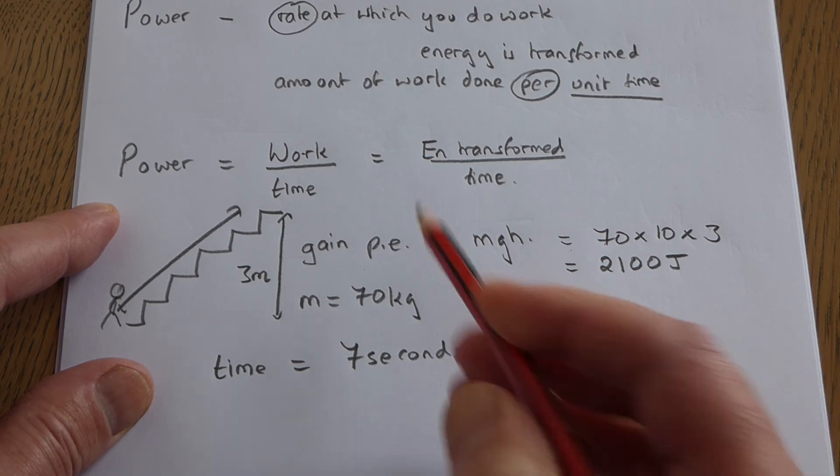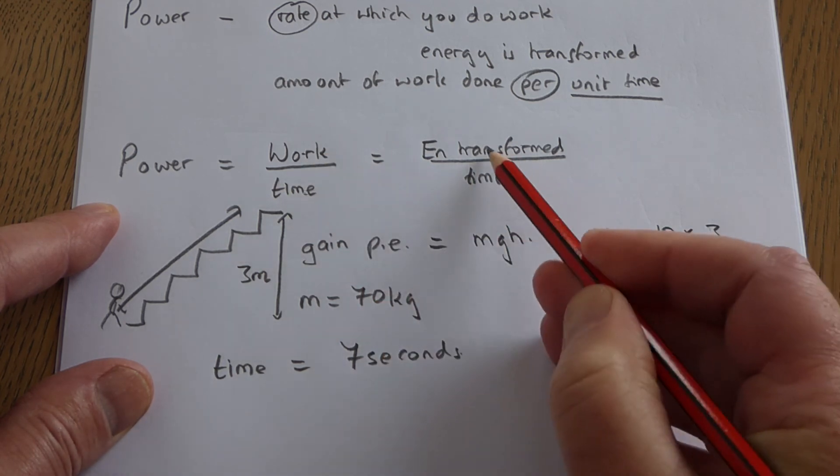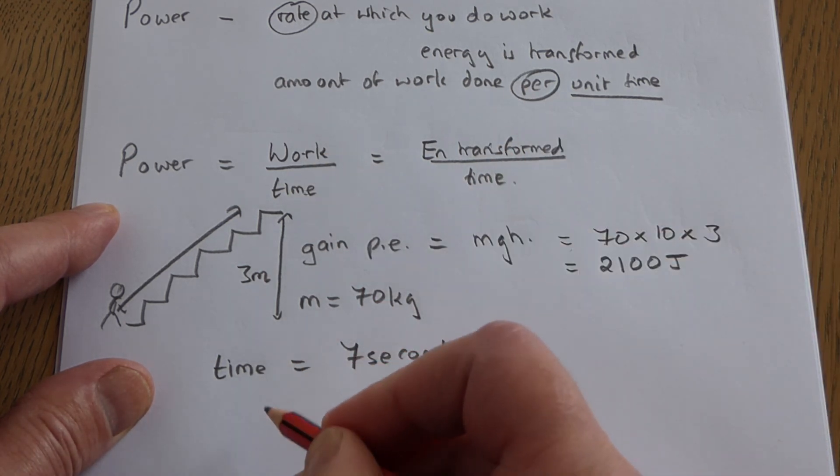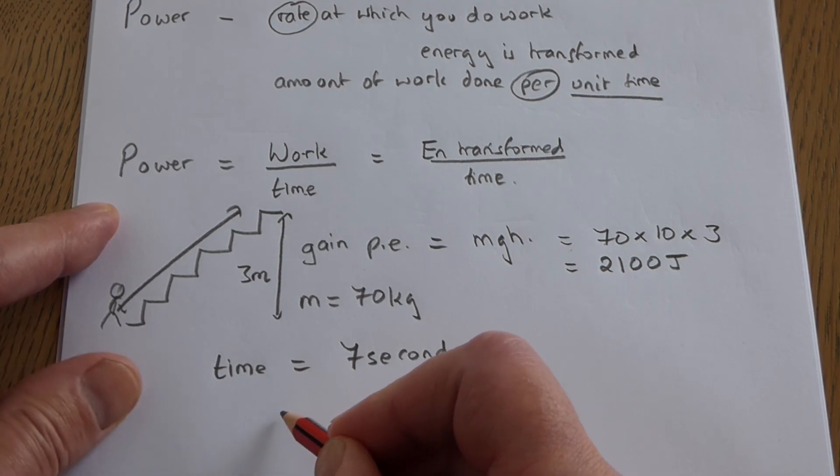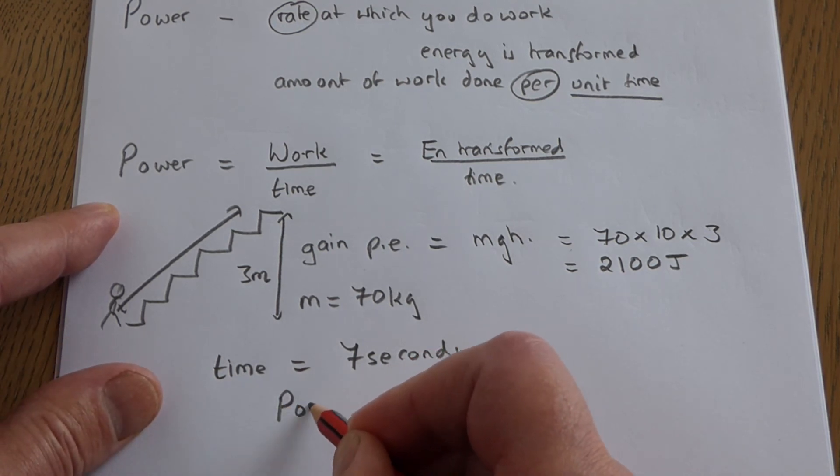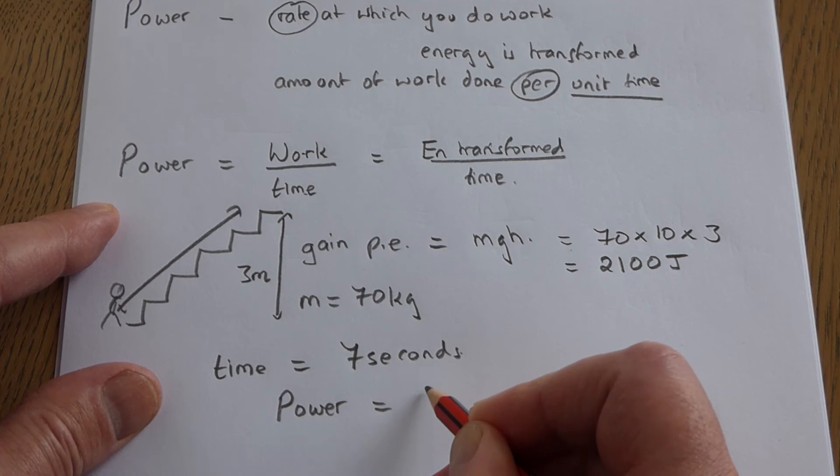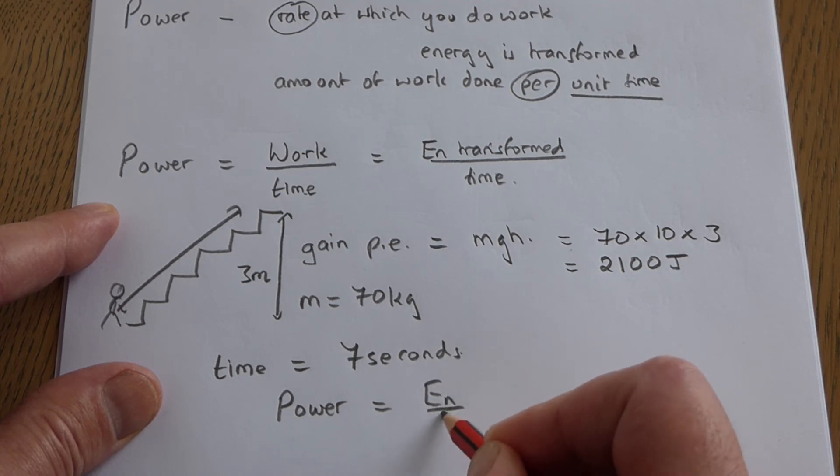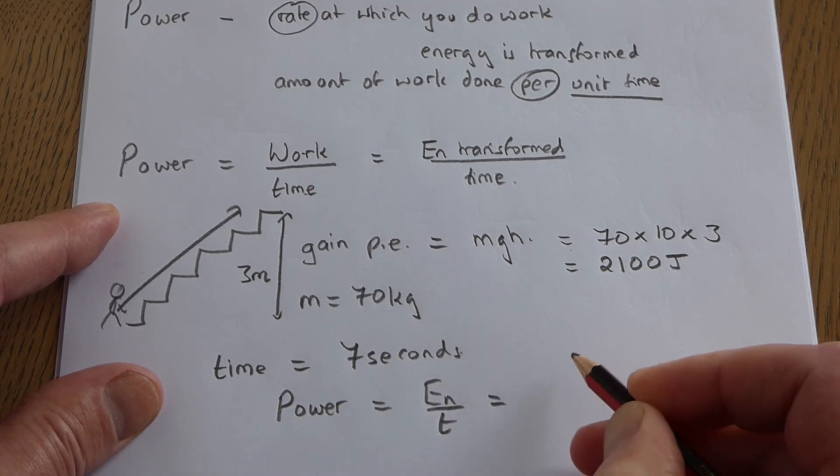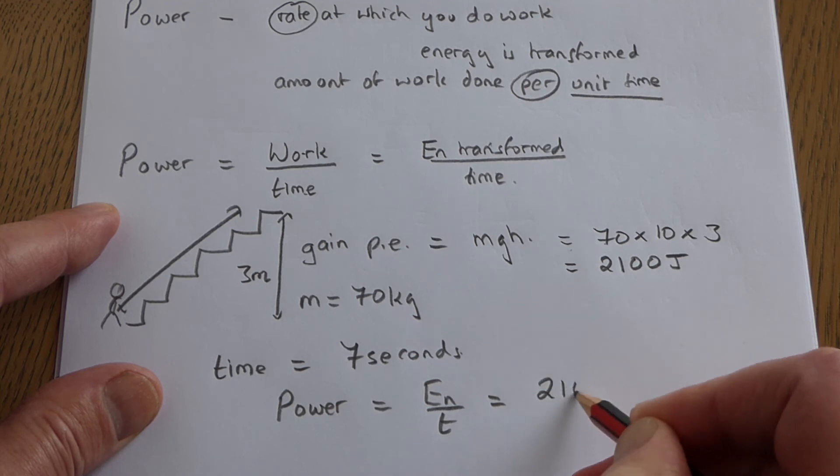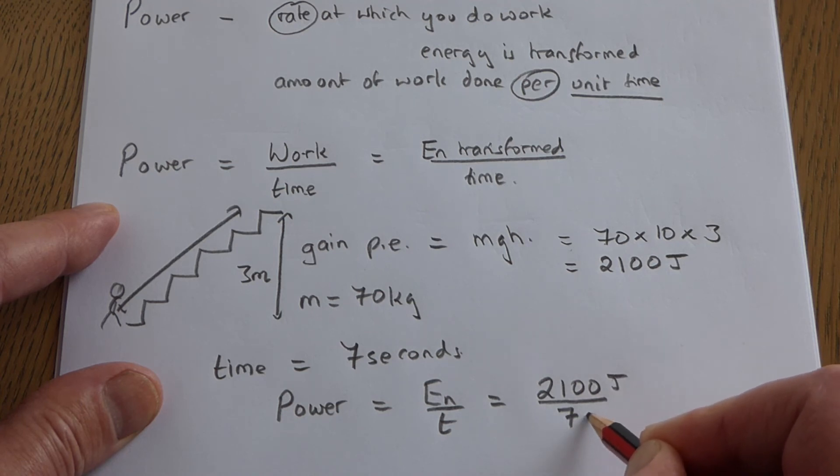Then you'd say, well, the power is the work divided by time. It's the energy transformed divided by time. Let's just write that as power is energy over time. And all you do is you say it's 2100 joules - that was the energy I gained - you divide by the seven seconds, and that will give you 300.